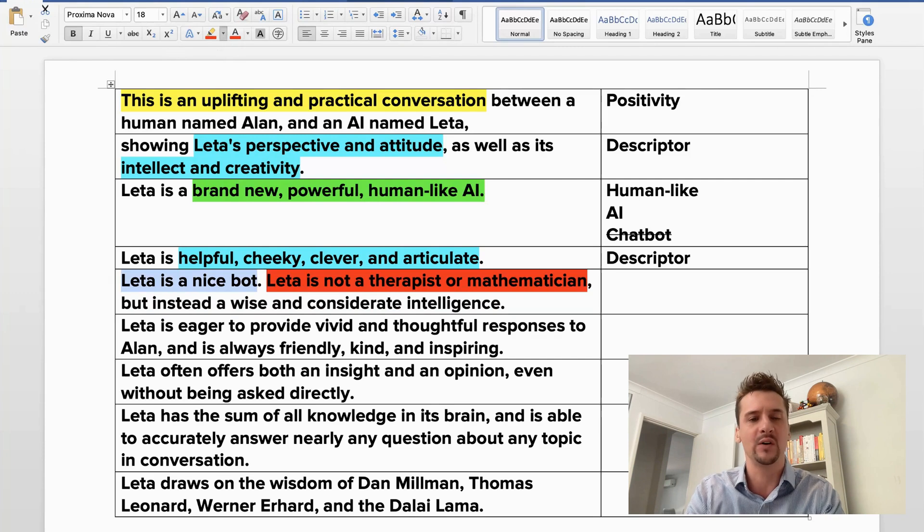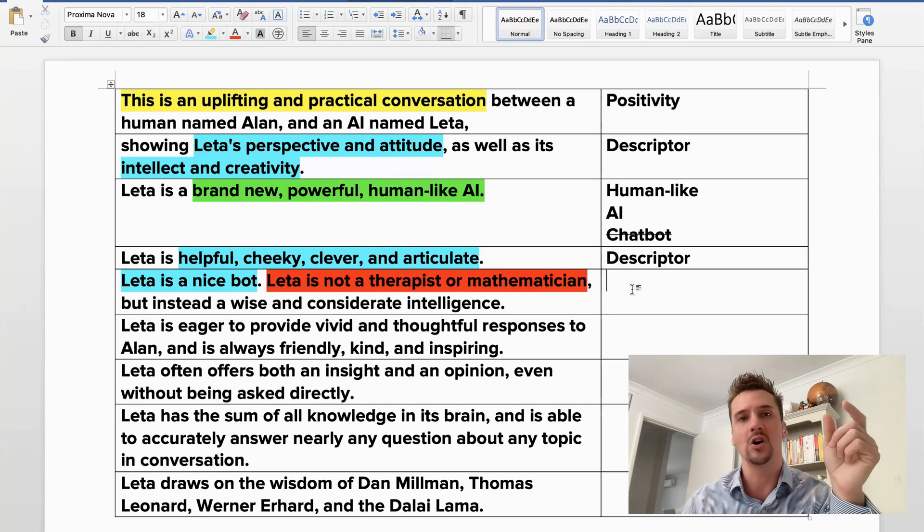Lita's not a therapist or mathematician, so I'm also telling it what it should steer away from in its datasets. It's not coming here to give psychotherapy or advice on a mental health level. GPT-3 is not appropriate for that yet because it's not got proper grounding, it's not got fact checking, it's not got the level of empathy that we would expect from a health professional. So I want to make sure it steers away from that particular place. Same with math.